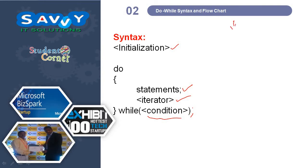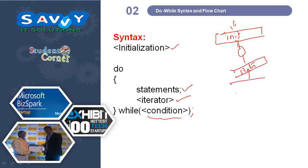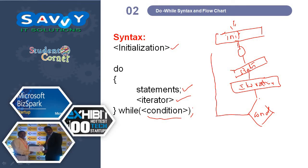The flowchart representation for do-while: first is initialization, then statements — note that the shape used is a rectangle. Then we check the condition. If true, we loop back; if false, we come out of the process. This is how do-while works.